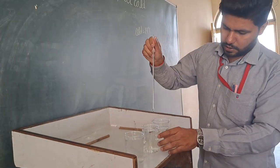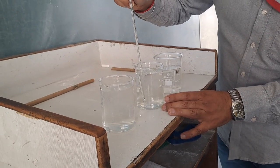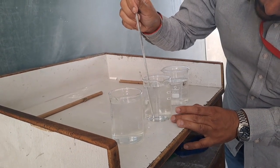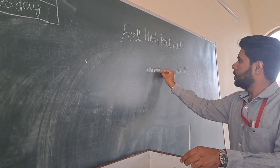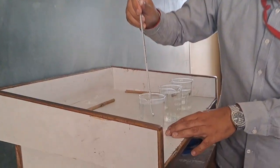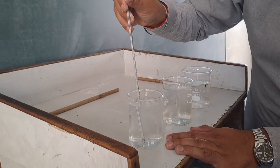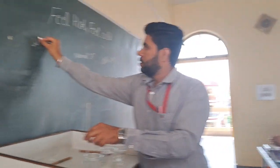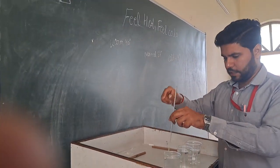Next we have normal water — normal tap water — and the temperature range is 27 degrees Celsius. So normal water is 27. Next, moving towards the hot water: hot water here is just warm water, and in the case of warm water, the temperature is 40 degrees Celsius.